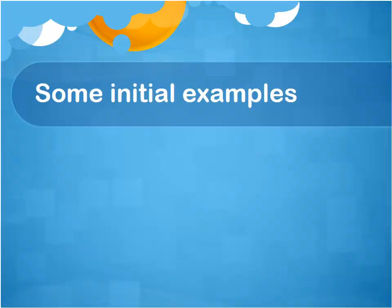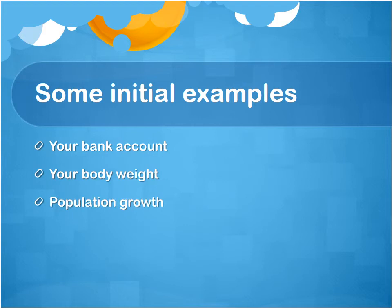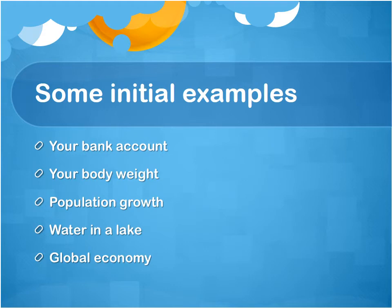Let's shift gears and talk about system dynamics using some very simple examples. I'll talk about your bank account, your body weight, population growth, water in a lake, and the global economy. Your bank account is a quantitative variable — the amount of money stored — that changes over time. It has inputs such as income and deposits, and outputs such as expenses and investments. Some inputs and outputs depend on the account balance itself, like interest and fees.